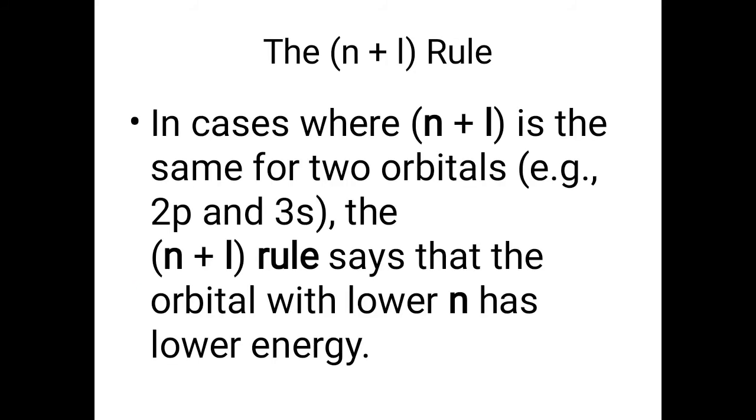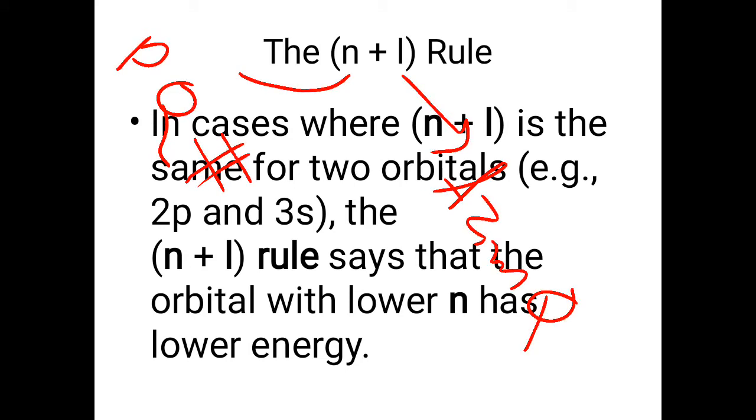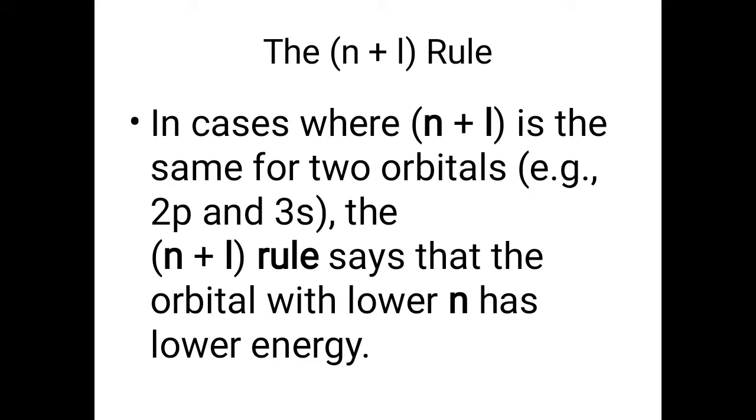The next is a very important n plus l rule. n is the principal quantum number and l is the azimuthal quantum number. Again you must know about the shell and about the sub shell. Now in this case we see we have to fill up the electrons in any atomic structure and we have to calculate first its n plus l value.